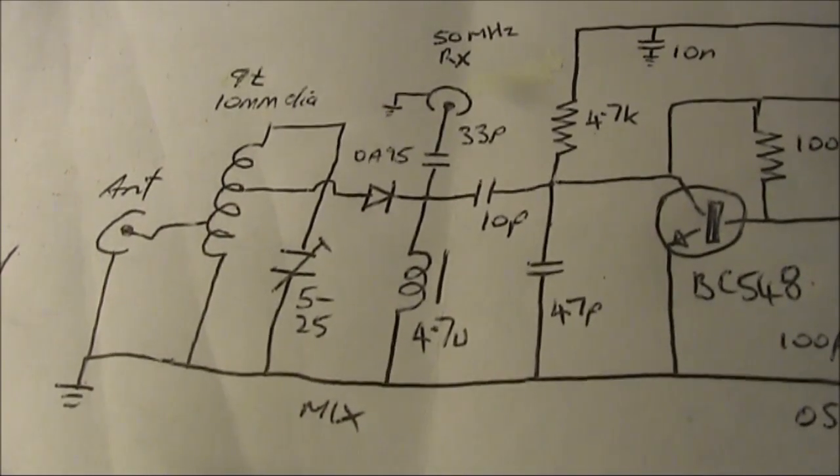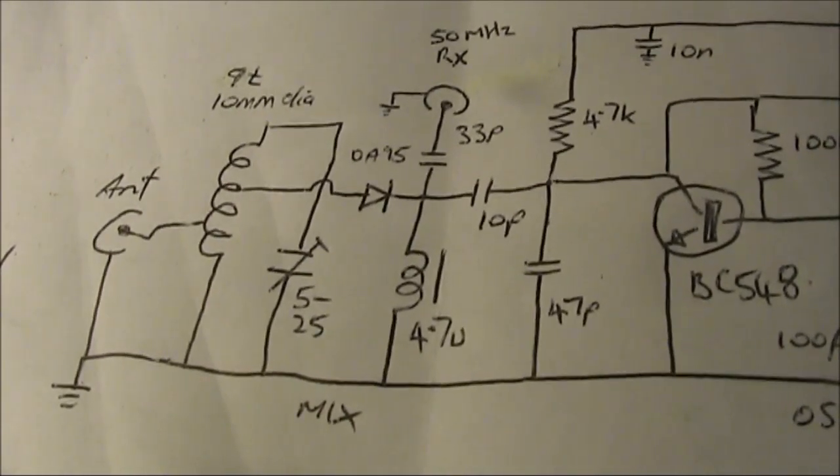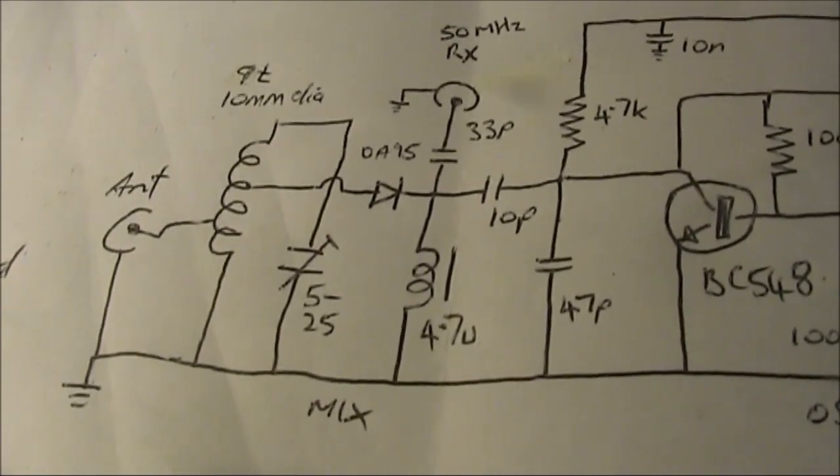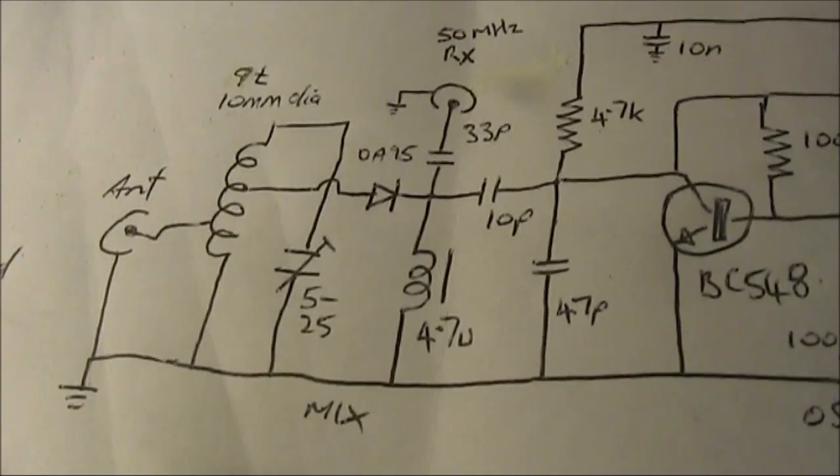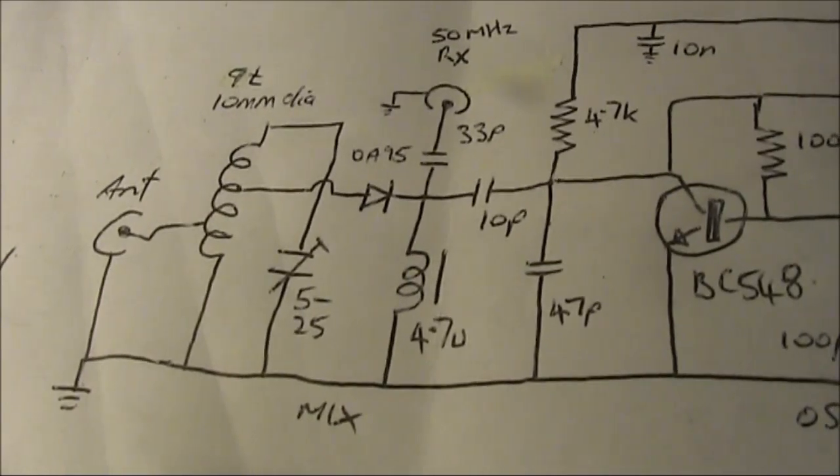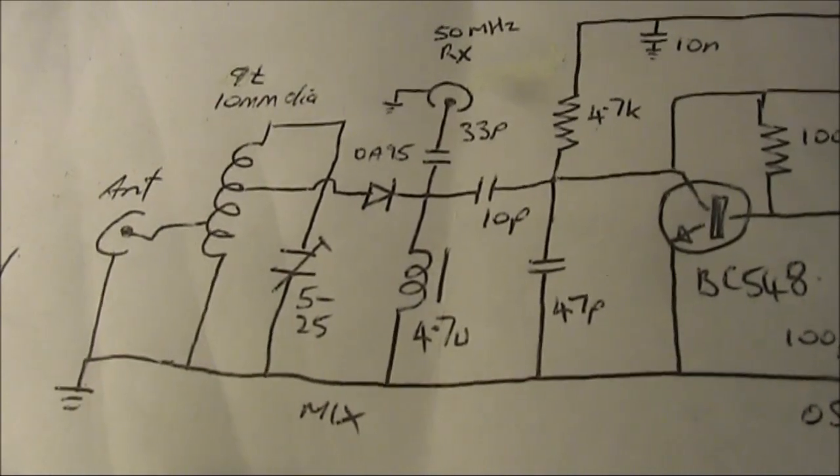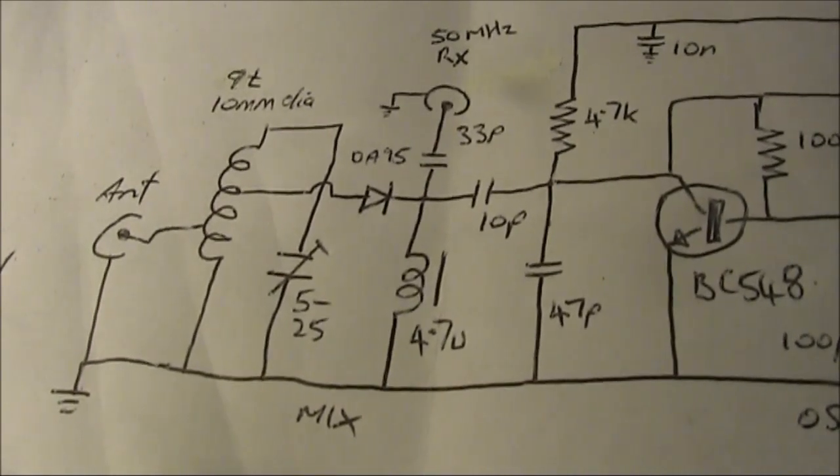That will make it easier to confirm that you are actually tuning on 70MHz and not some other signal, because the harmonic generator will give you other outputs. As well as 70MHz, if you're using 14MHz, you'd also get 84MHz and also 56MHz.